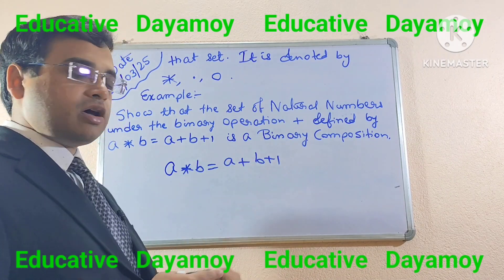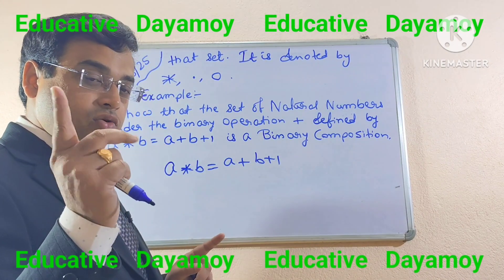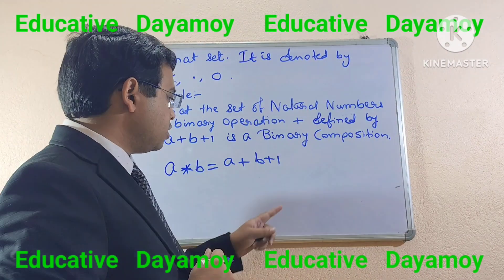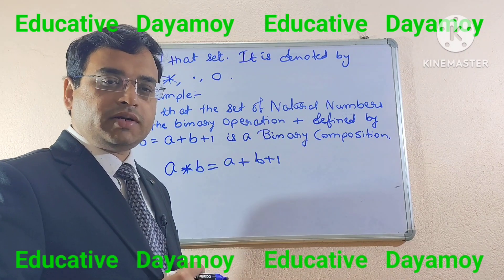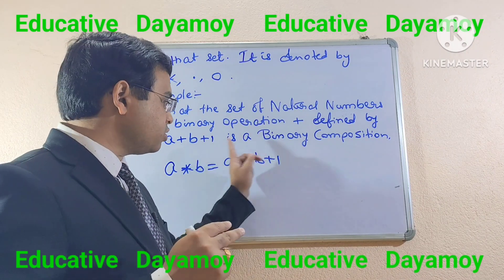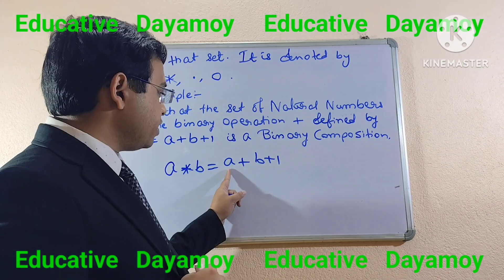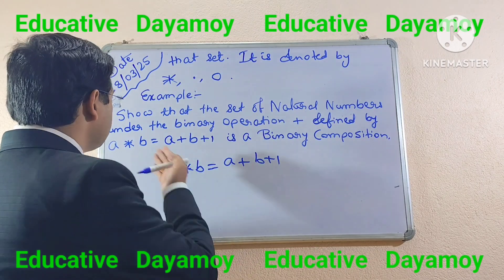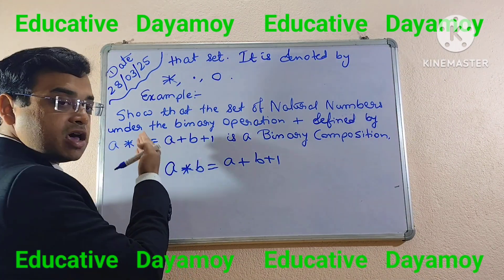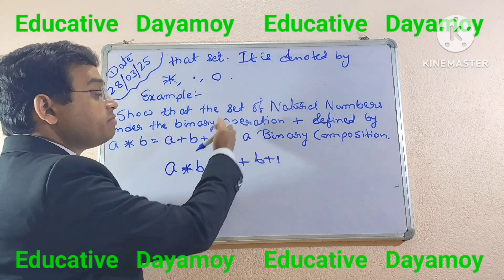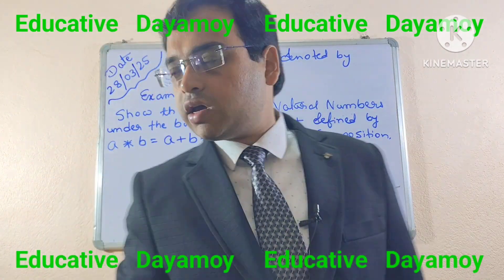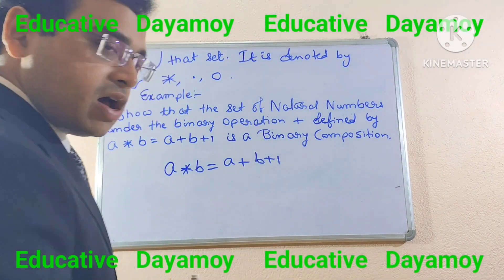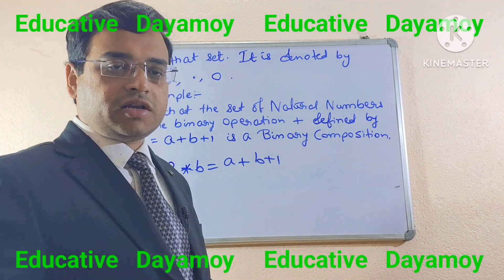As the definition says, binary composition is a rule which takes a minimum of two elements from the set and produces a unique element belonging to that set. Here the rule is A plus B plus 1. Since two variables A and B appear, we take two elements from the set. In another example, if defined as A asterisk B asterisk C equals A plus B plus C plus 1, you would take three elements.